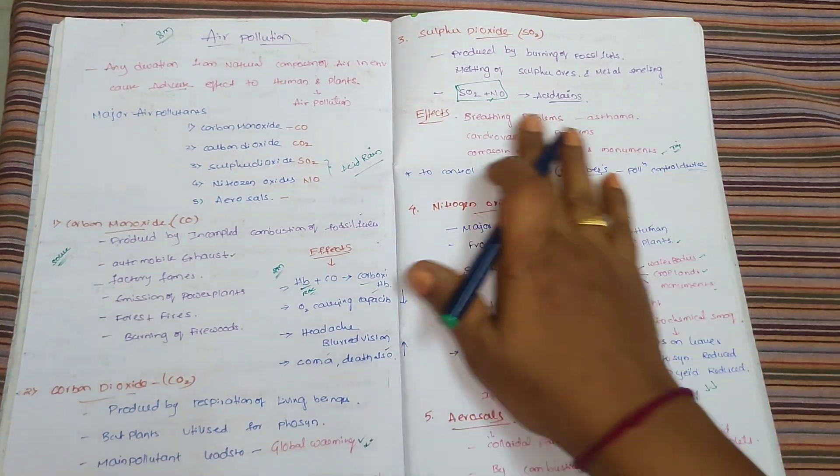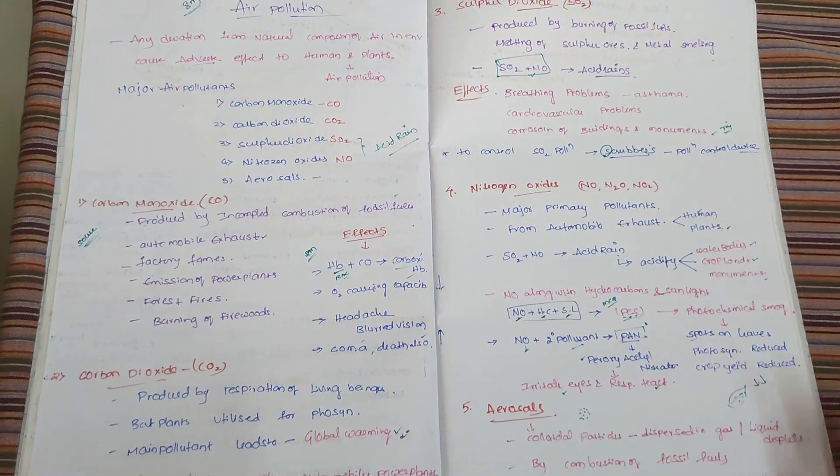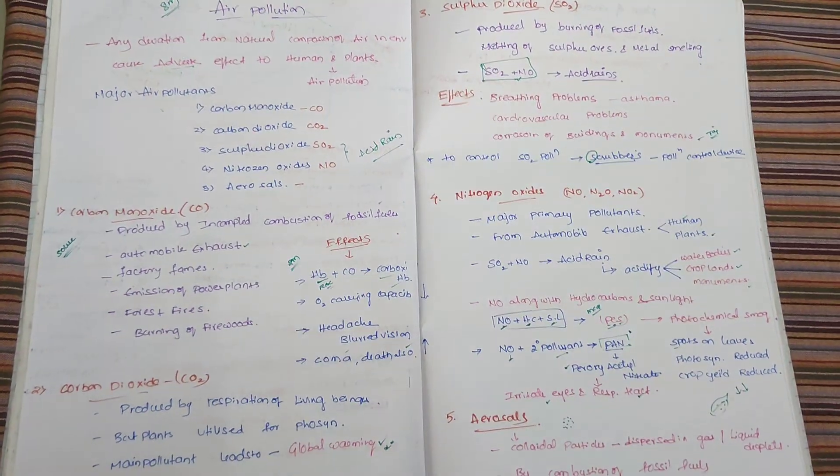So you have to write what are the major air pollutants, what is their source, and what are the effects on human beings. This is the long answer question. Thank you. If you like the video, please share and subscribe.